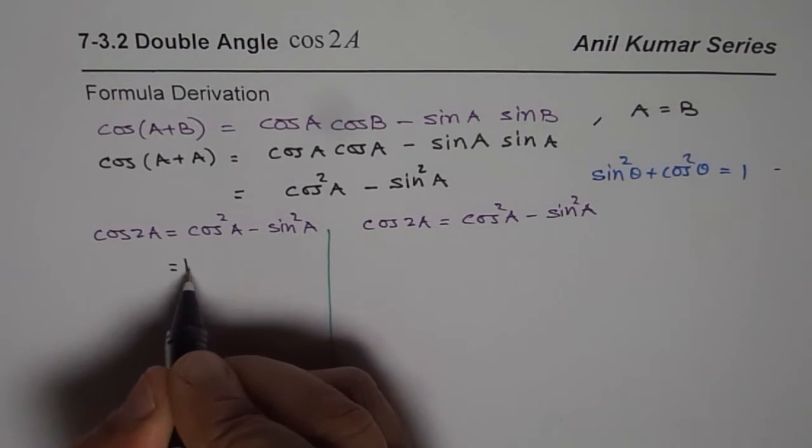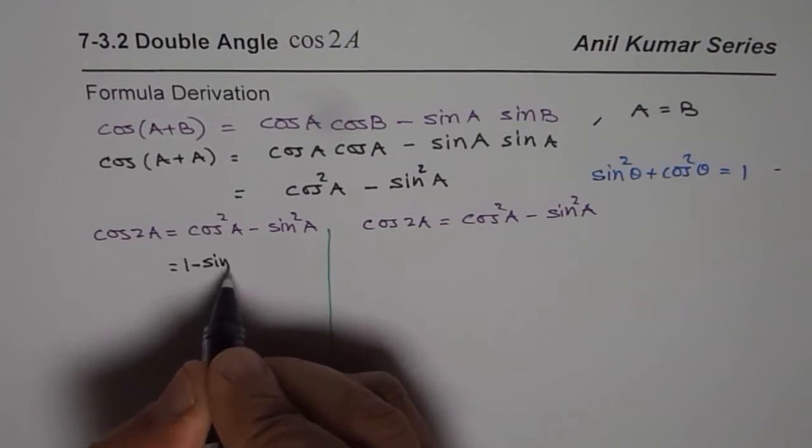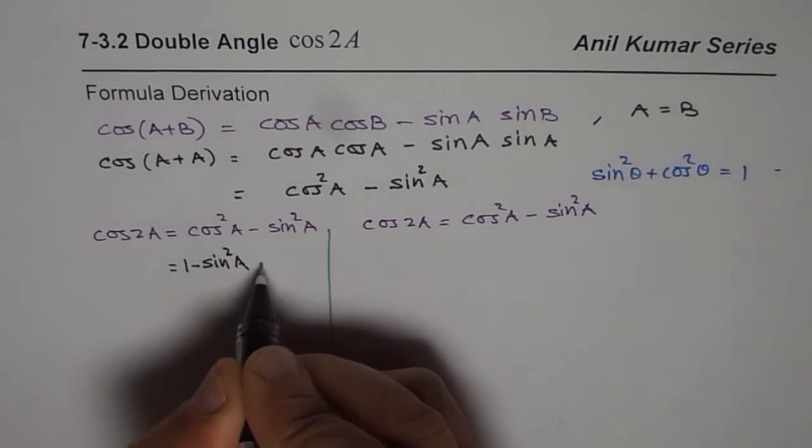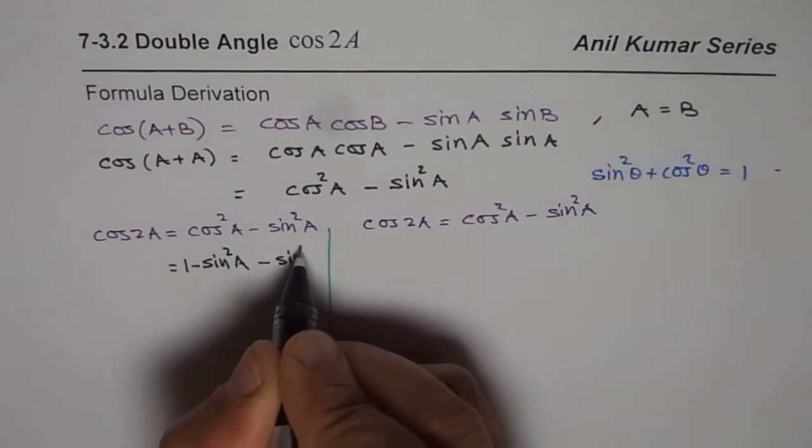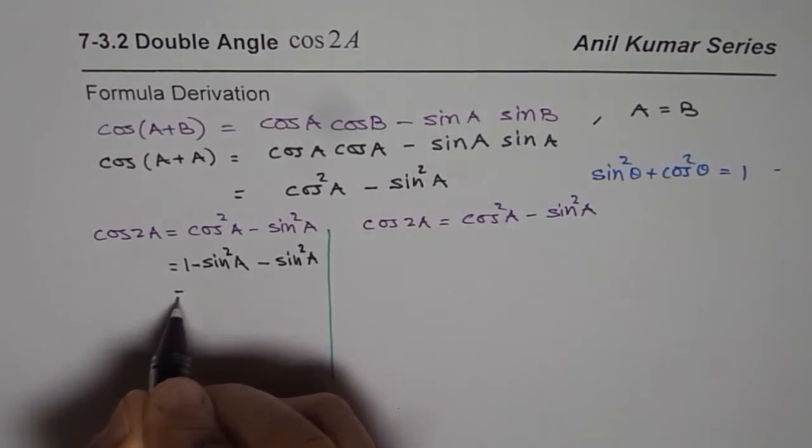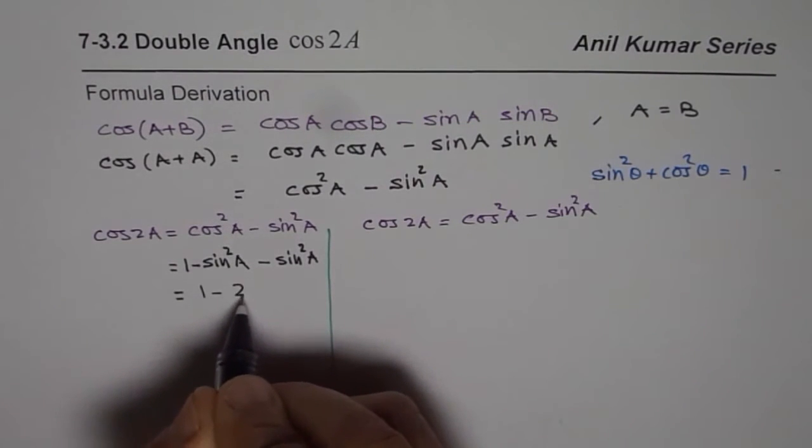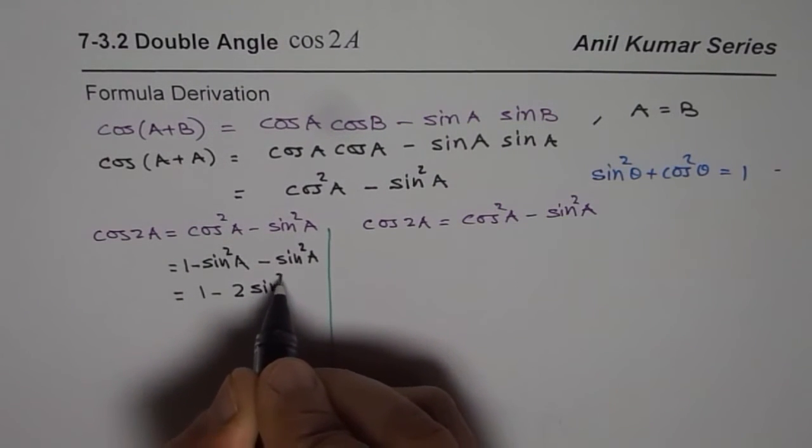So I will replace cos square A as 1 minus sin square A. I already have minus sin square A. That gives me the second formula, 1 minus 2 sin square A.